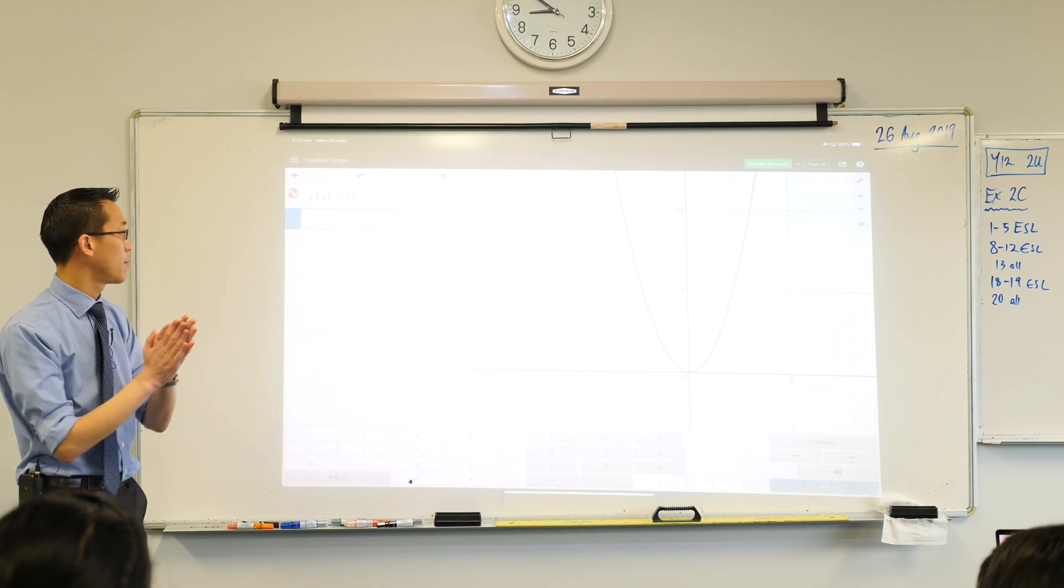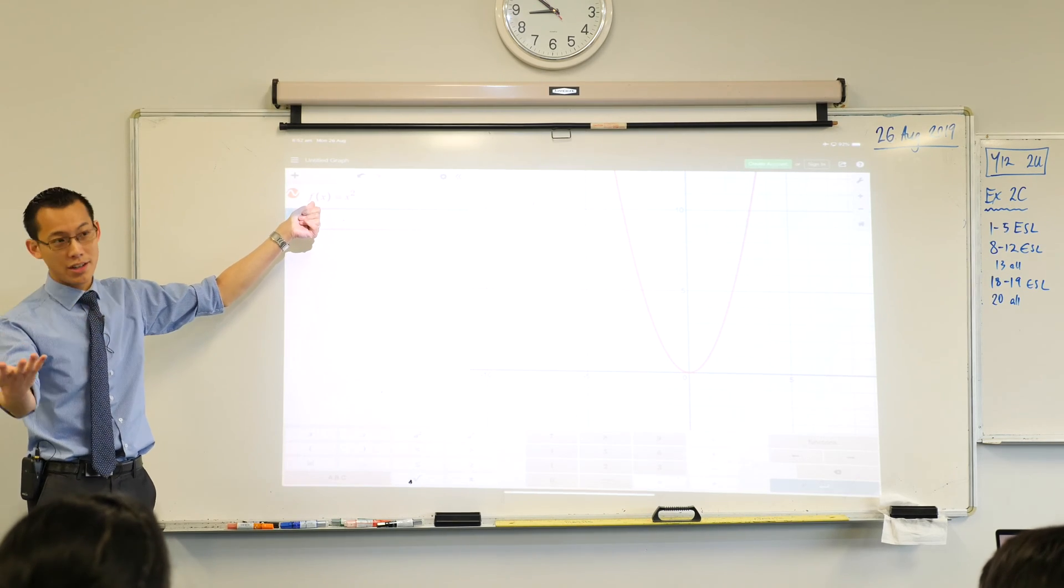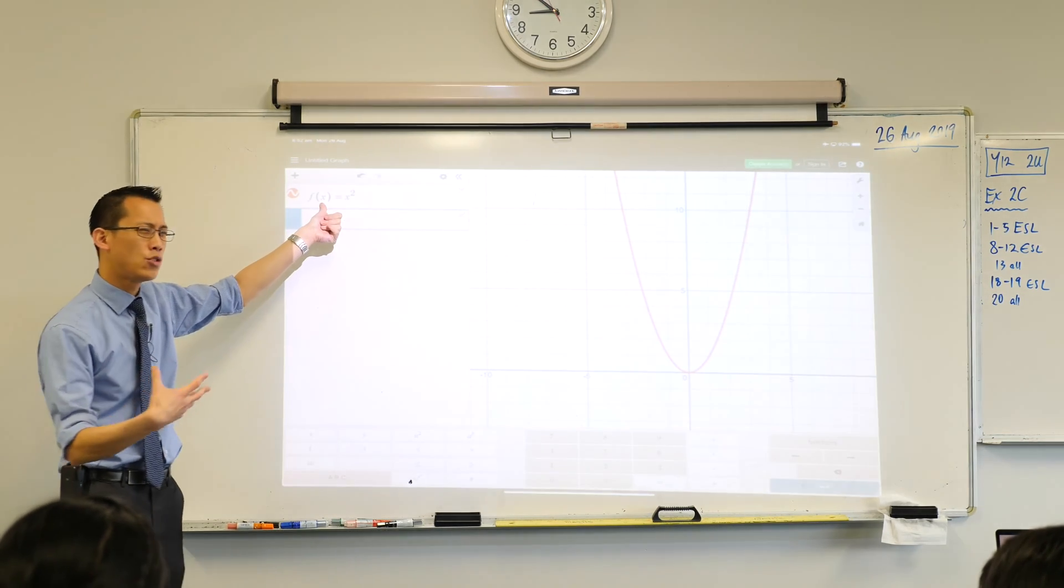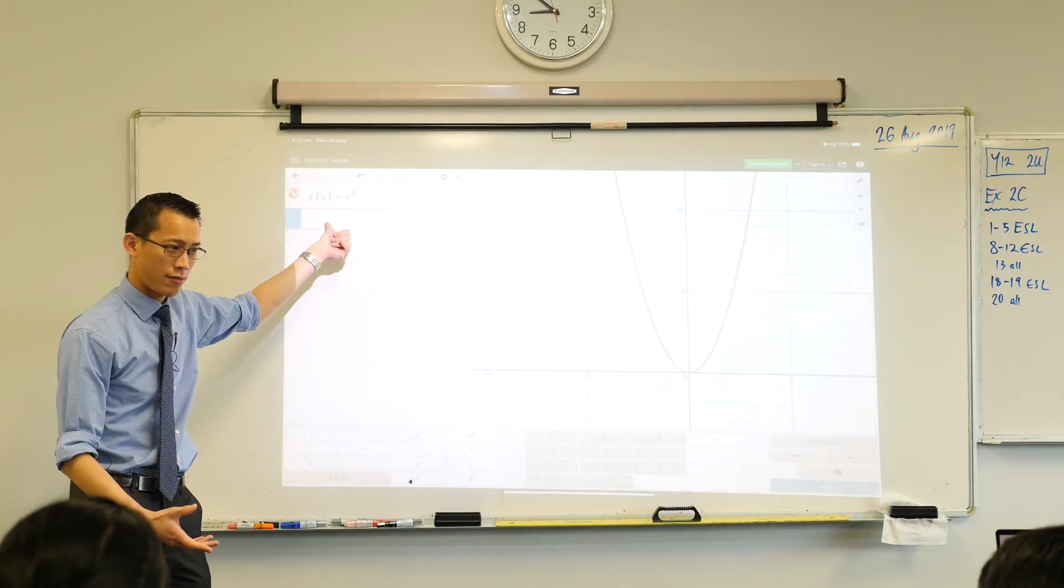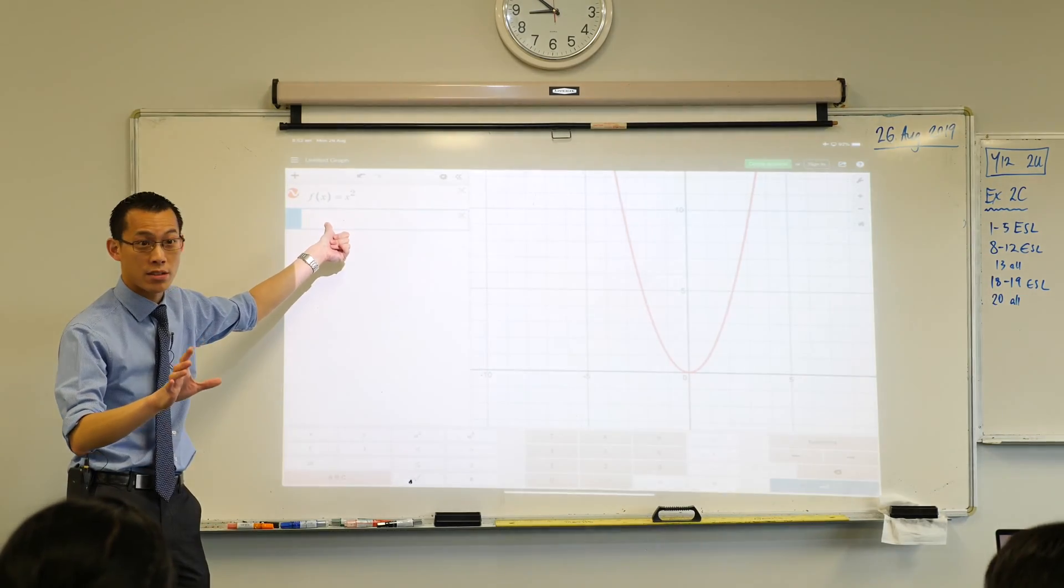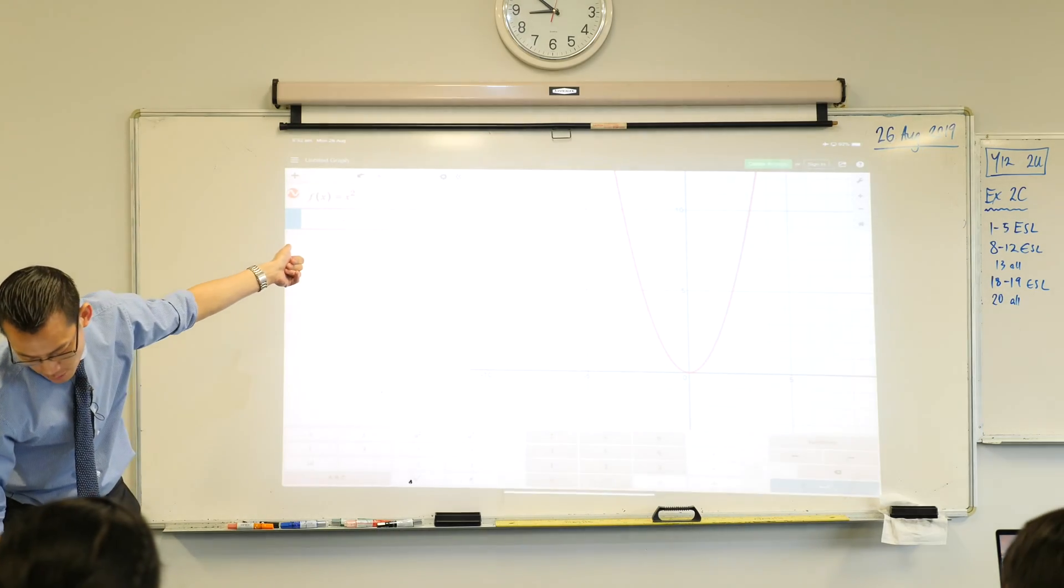And here's what I'd like you to help me recall. When we write a function in this notation f of x, how would we normally write its derivative? Because we've got a bunch of ways to do it. F dash x, very good.